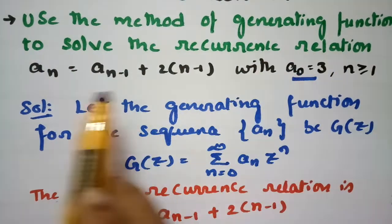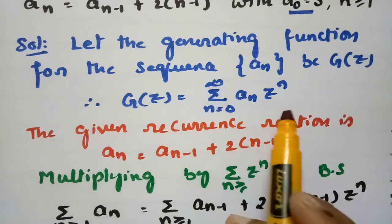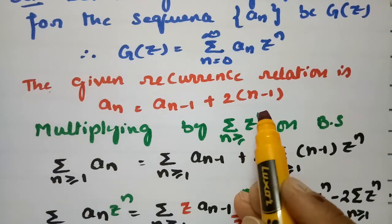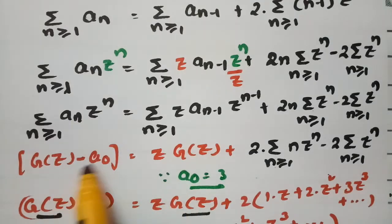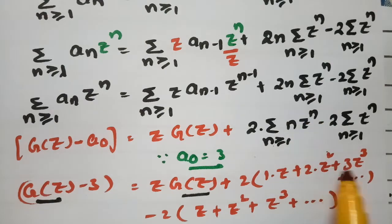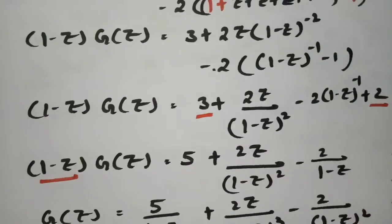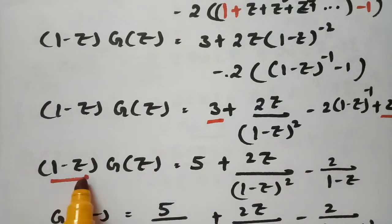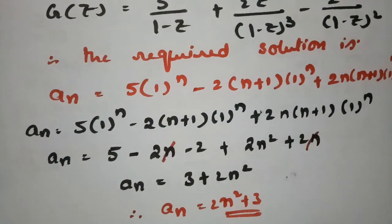This is how we solve using the generating function. First, define G(z) = Σ aₙ zⁿ, multiply both sides by zⁿ, reindex by multiplying and dividing by z, substitute a₀ = 3, expand the series, and use standard generating function identities. The required solution is aₙ = 2n² + 3. Thank you for watching — practice these problems and share with your friends!